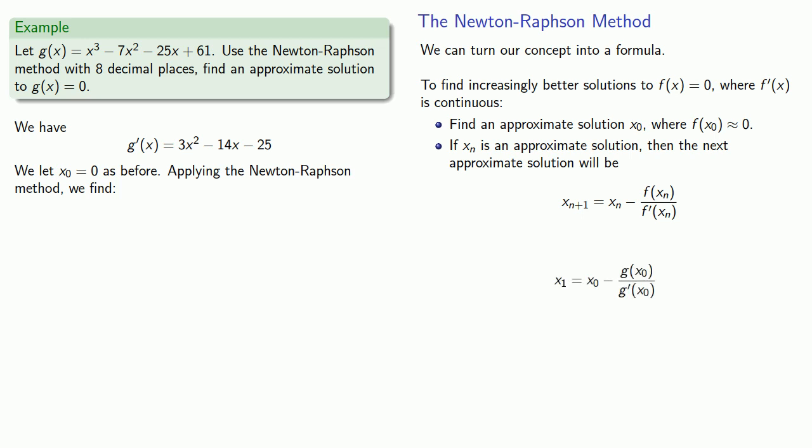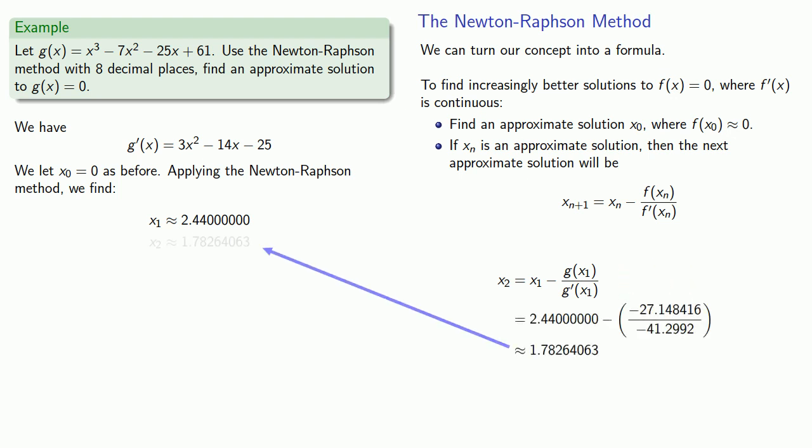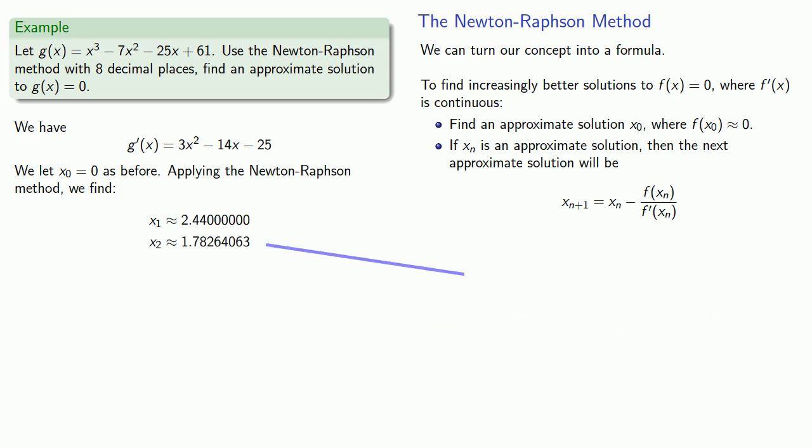Our first iteration is going to give us x₁ approximately. Now I know that 2.44000000 is an approximate solution, so I'll drop that into my formula and get my next approximate solution. Now I know that 1.78264063 is an approximate solution, so I'll drop that into my formula and get the next approximate solution.